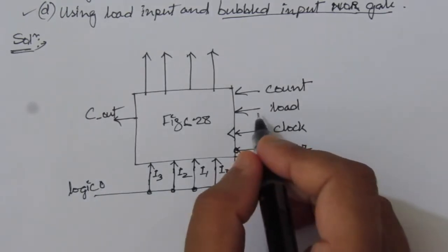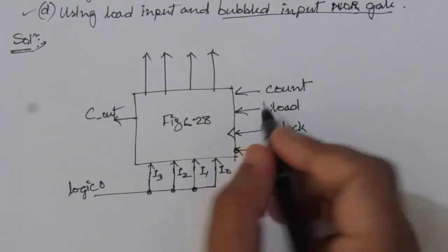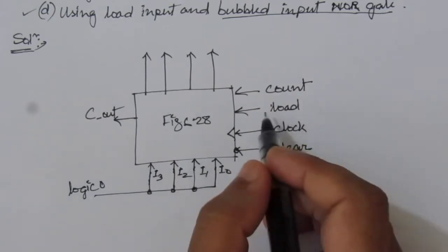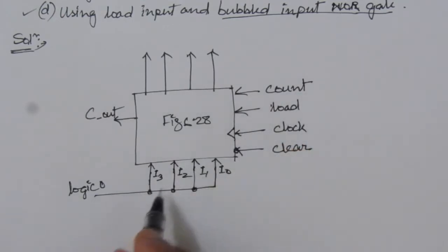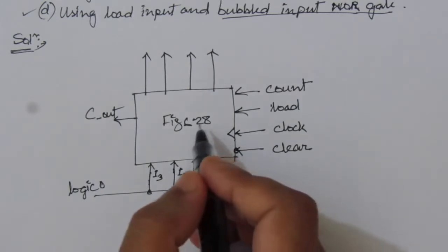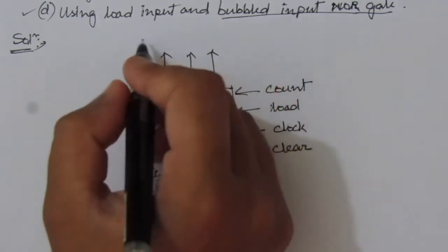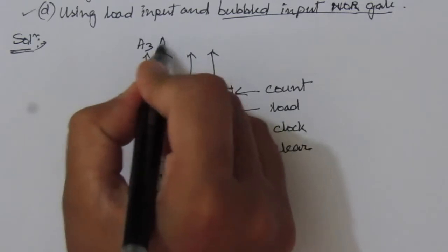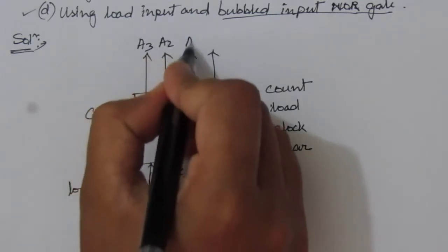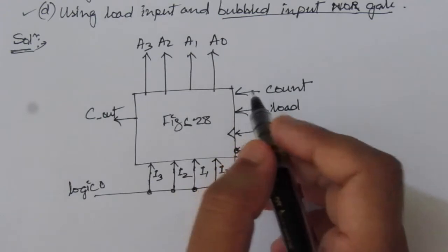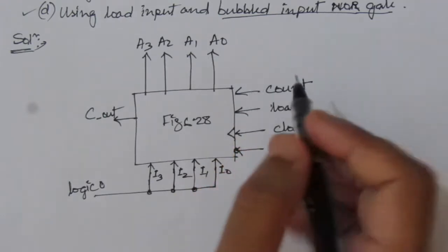Let us short all these inputs and apply logic 0 here. Whenever load is equal to 1, all these 4 inputs are 0. That will load — whenever load is equal to 1 — this logic 0 input will be applied to this register. So here we have 4 outputs: A3, A2, A1, A0.